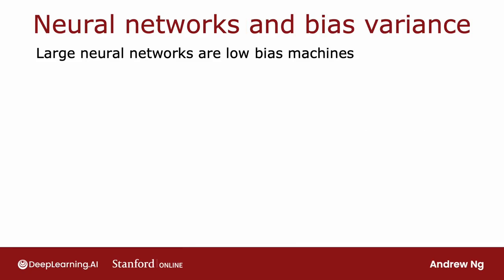And it turns out that large neural networks, when trained on small to moderate-sized datasets, are low-bias machines. And what I mean by that is, if you make your neural network large enough, you can almost always fit your training set well, so long as your training set is not enormous.